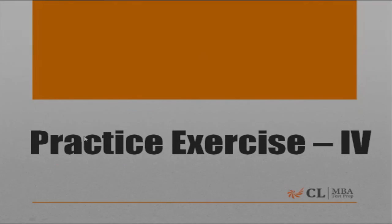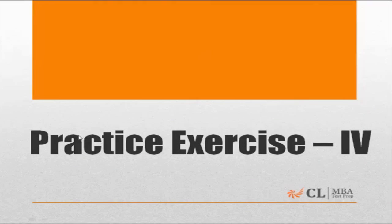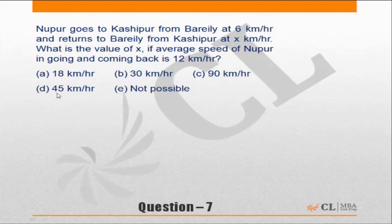Practice exercise 4 of the Time Speed Distance funda book. Question 7: Noopul goes to Kaashipul from Baleli at 6 kilometers per hour and returns from Baleli to Kaashipul at x kilometers per hour. What is the value of x if the average speed of Noopul going and coming back is 12 kilometers per hour?